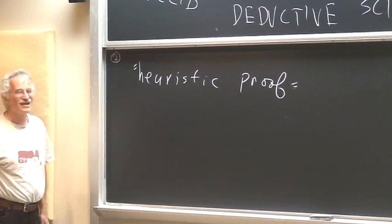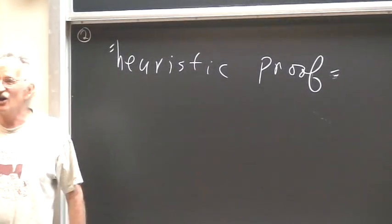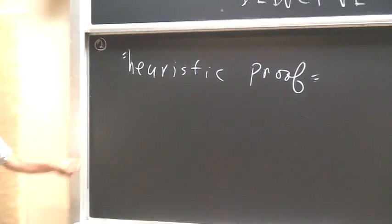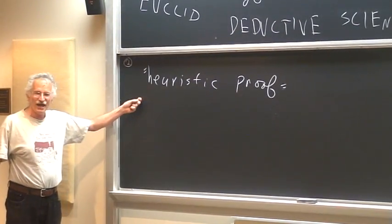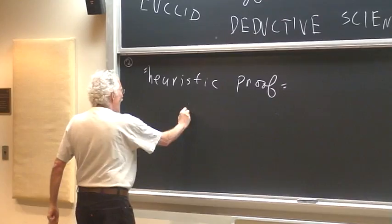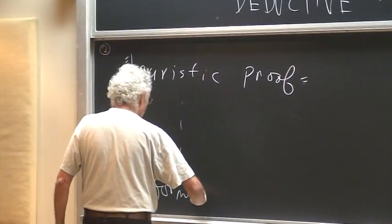This is complete nonsense. You have lots and lots of types of proofs. Heuristic proof is one of them. And on the other side is a formal proof.